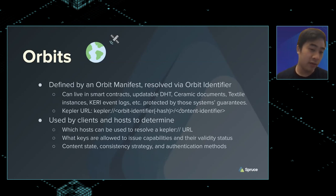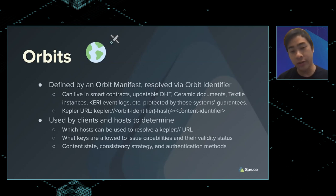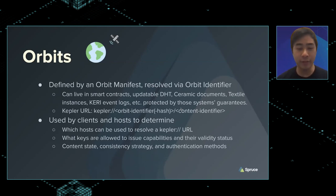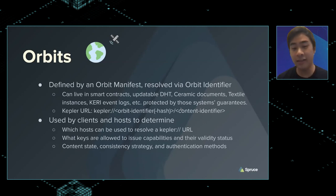There's other information too that defines aspects of the orbit — such as what the base permission model is, when we issue capabilities and what the validity status is, either a certificate revocation list or a cryptographic accumulator. And then content state: what's the latest Merkle root hash of content, what's our consistency strategy, and what authentication methods do we support?